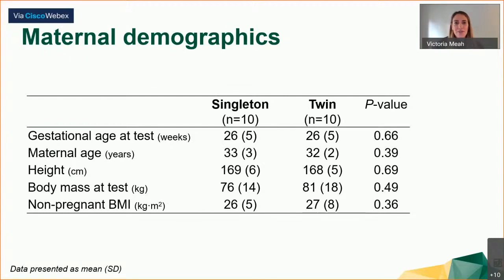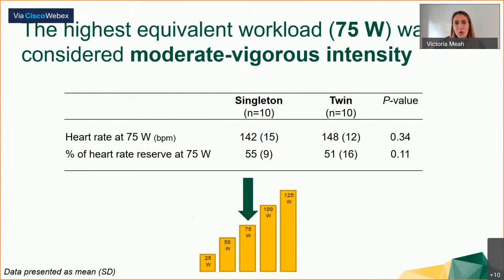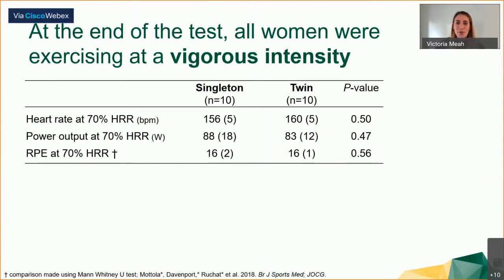Groups were matched for gestational age, maternal age, height, and pre-pregnancy BMI, and all women were in their second or third trimester. Twin pregnancies did indeed have a greater resting cardiac output and heart rate at rest, but no significant differences in stroke volume, mean arterial pressure, systemic vascular resistance, or ejection fraction. The highest equivalent workload for all participants was 75 watts, considered moderate to vigorous intensity. All women met the 70% heart rate reserve target and were exercising at vigorous intensity.